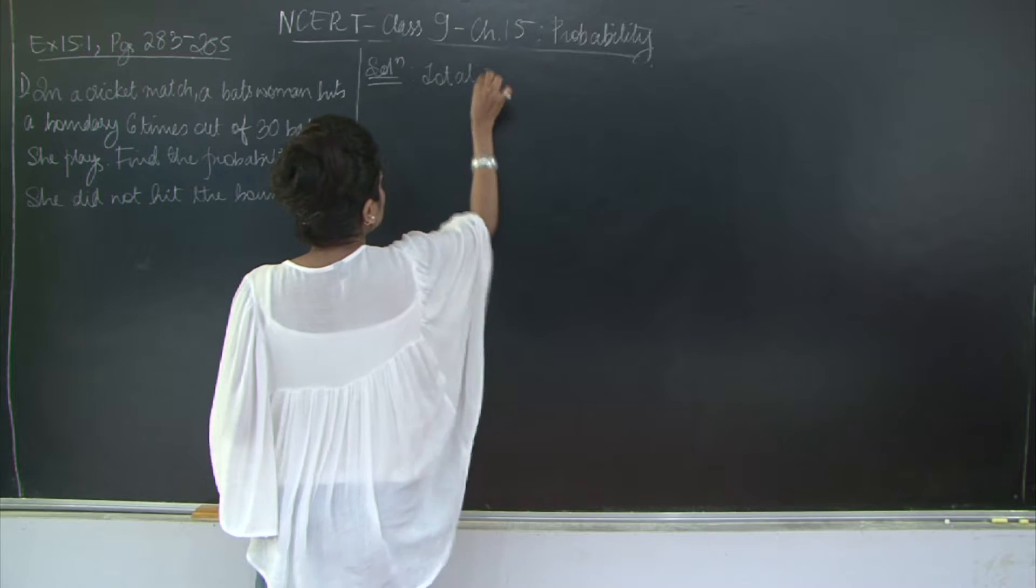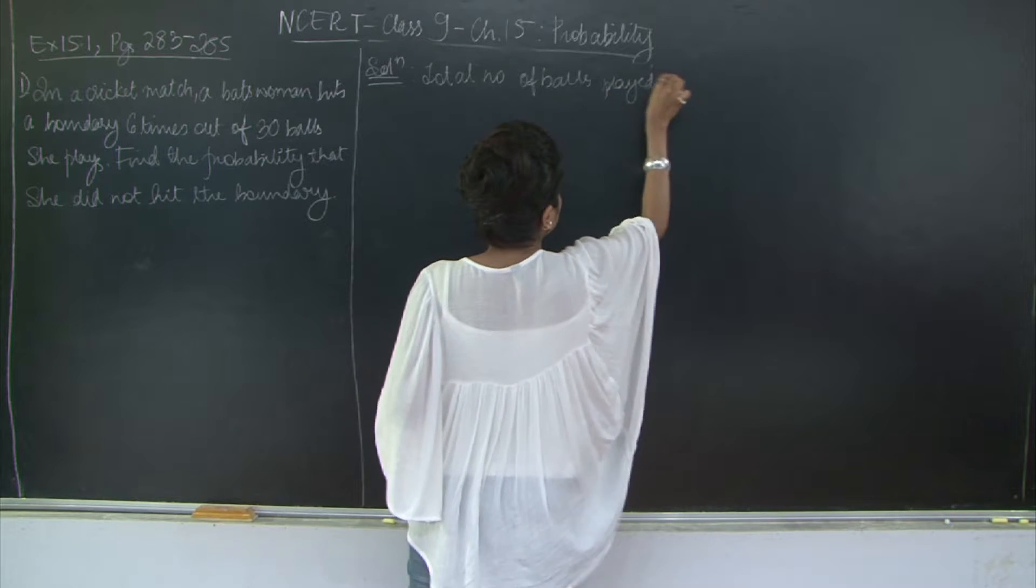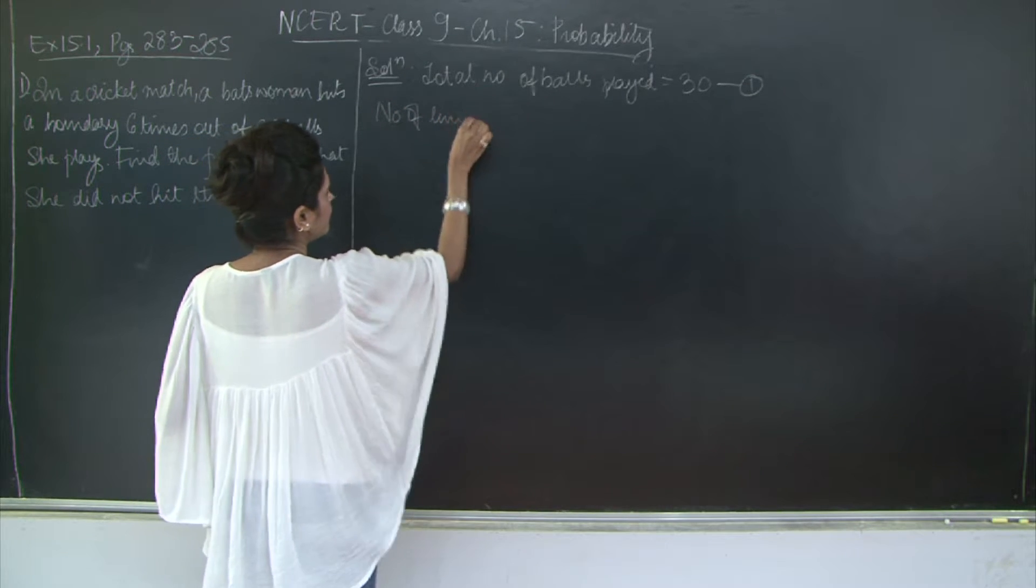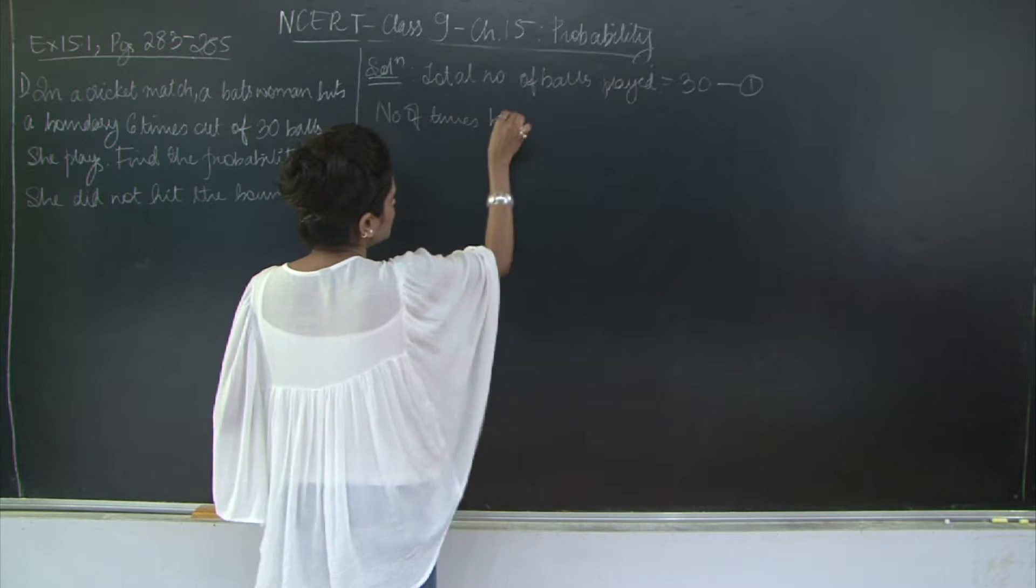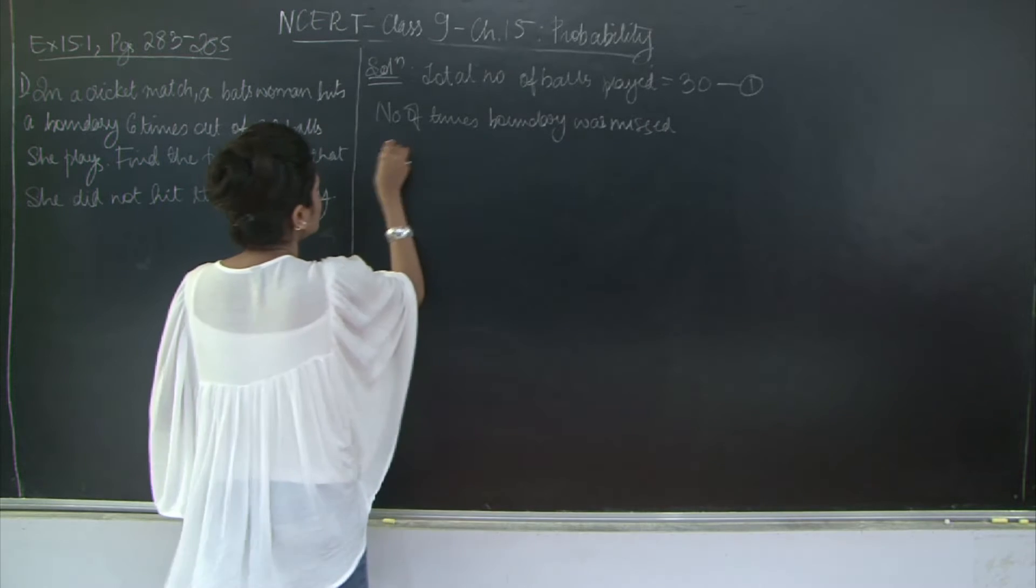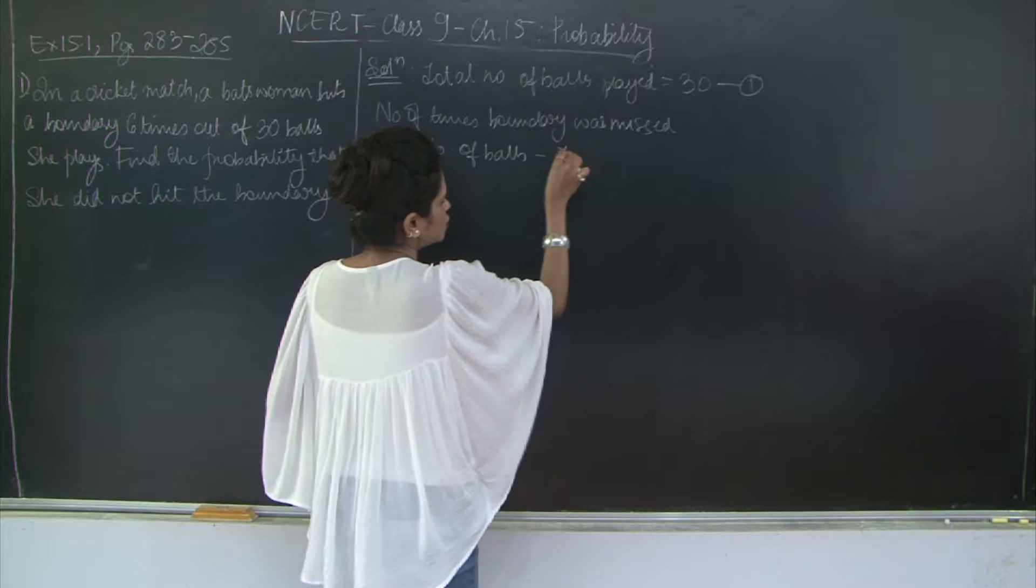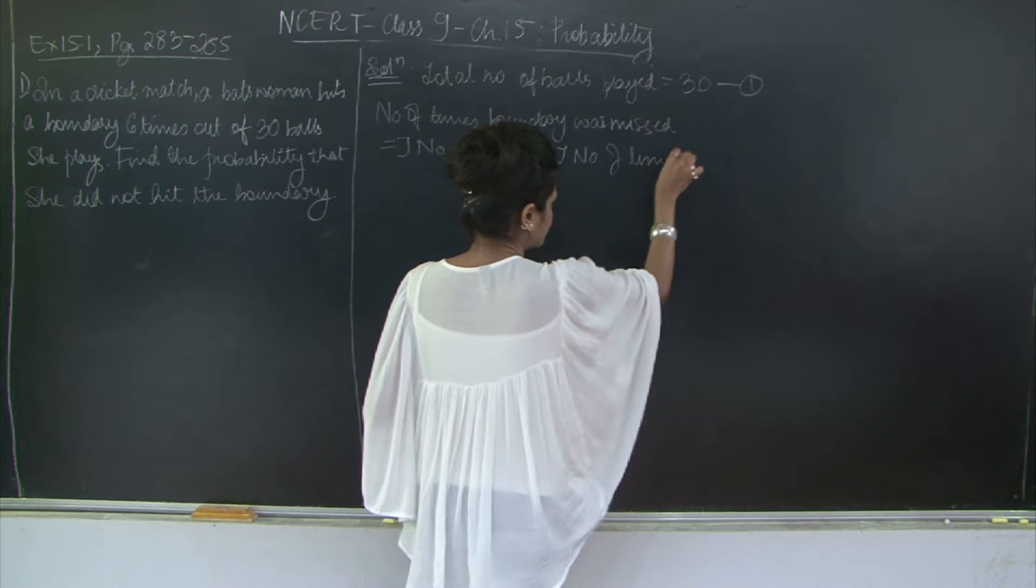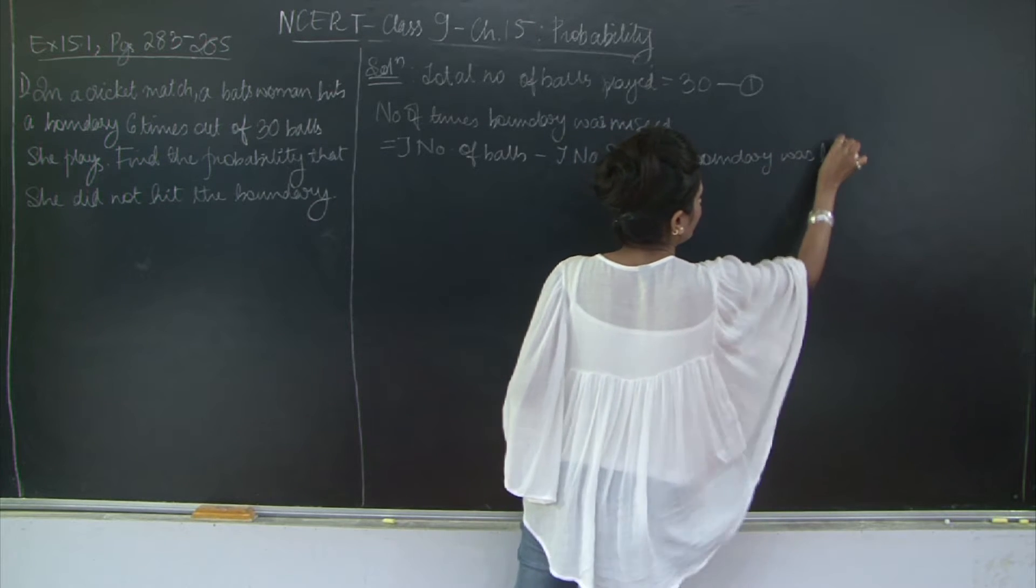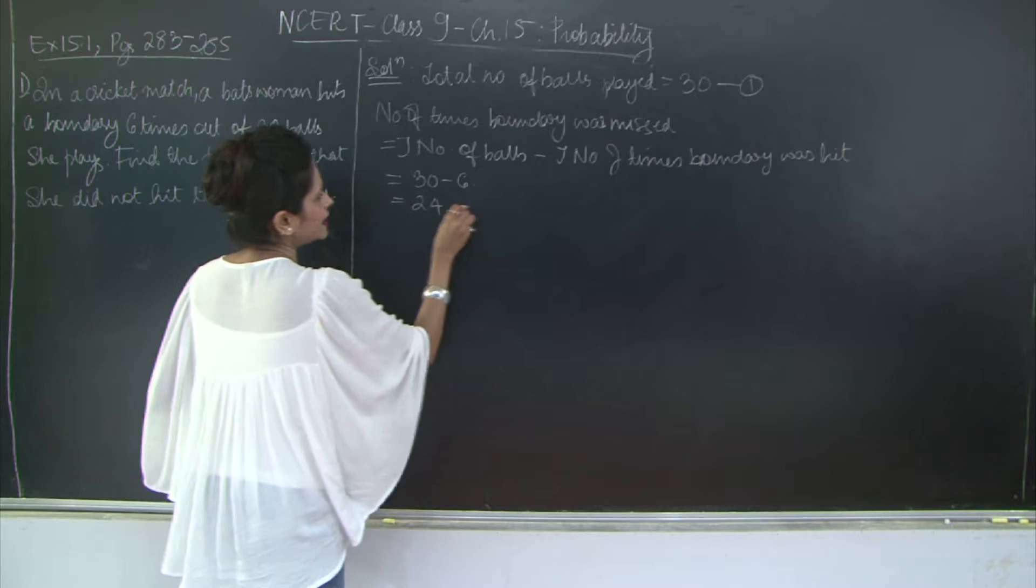So total number of balls played is equal to 30. Let's mark this as equation 1. Now, number of times boundary was missed. This is going to be equal to total number of balls minus total number of times boundary was hit. So this is going to be 30 minus 6, which is 24. Let's mark this as equation 2.